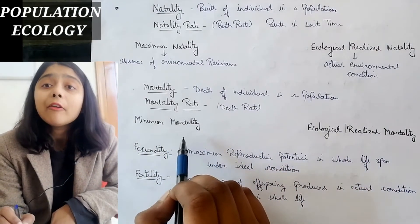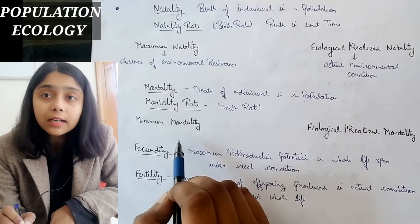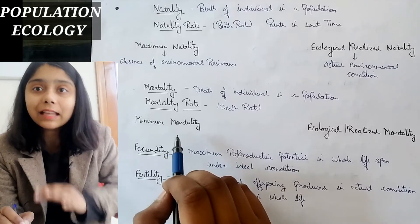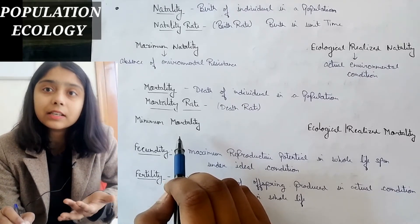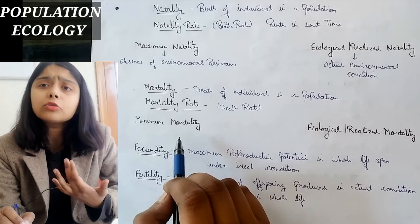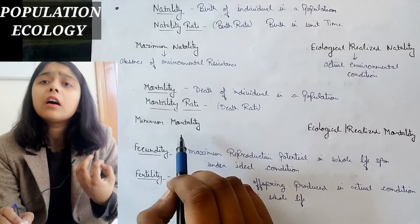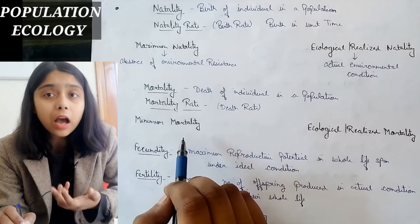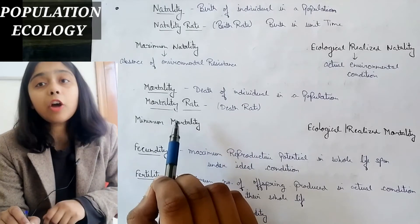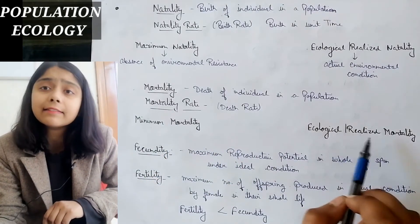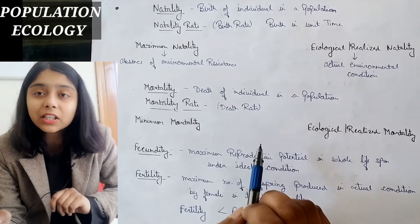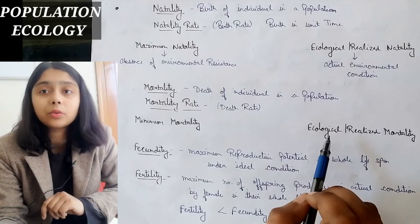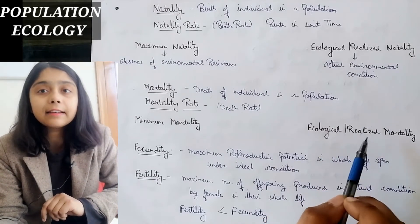Minimum mortality means when environmental factors are not responsible — environmental factors like accidents, flood, drought, or any kind of environmental factors are not affecting — then what will be the minimum number of mortality? Ecological and realized mortality means when the actual conditions are responsible, how many individuals will die — that is ecological and realized mortality.